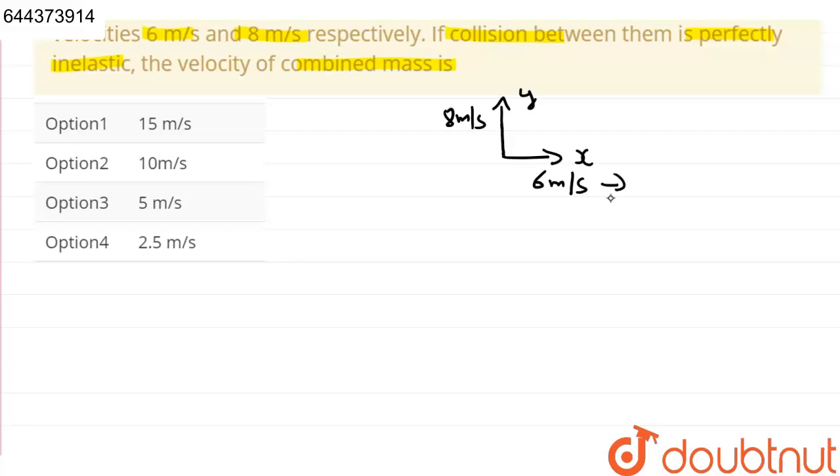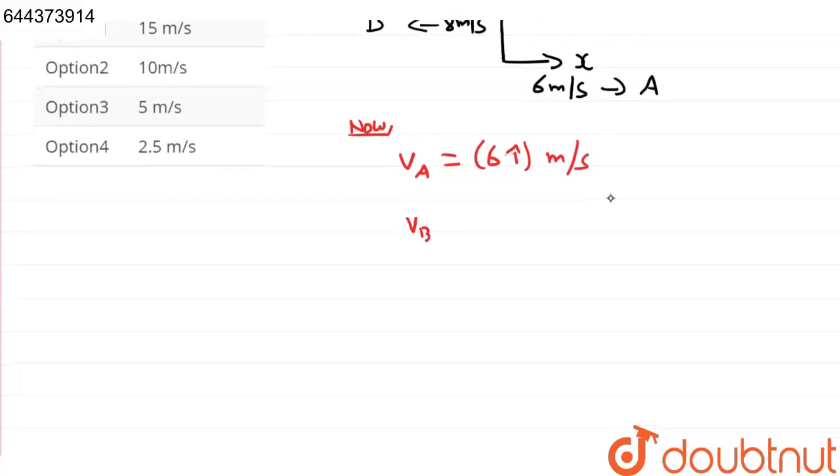Therefore, suppose this is particle A, suppose this is particle B. Now, velocity of particle A is 6î meter per second, and velocity of particle B is 8ĵ meter per second.